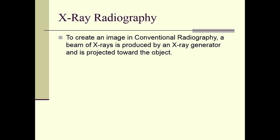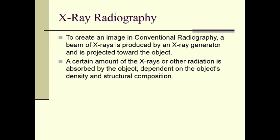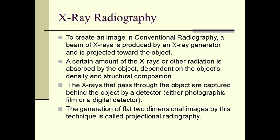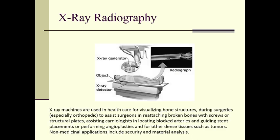To create an image in conventional radiography, a beam of X-rays is produced by an X-ray generator and projected towards the object. A certain amount of X-rays is absorbed by the object depending on its density and structural composition. The X-rays that pass through the object are captured behind it by a detector — either photographic film or a digital detector. The generation of flat two-dimensional images by this technique is called projectional radiography.